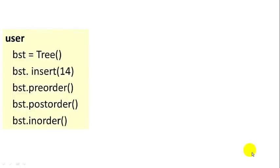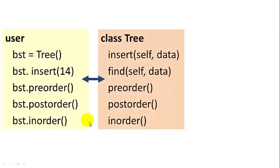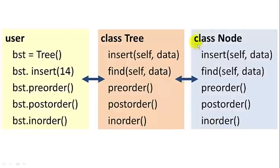For the user interface, we want the user to be able to instantiate a binary search tree by simply calling tree. We want to be able to insert values into the tree, and we want them to be able to call pre-order, post-order, or in-order traversal. The tree class itself will handle those commands, and it will have a helper class called the node class, which is invisible to the user.